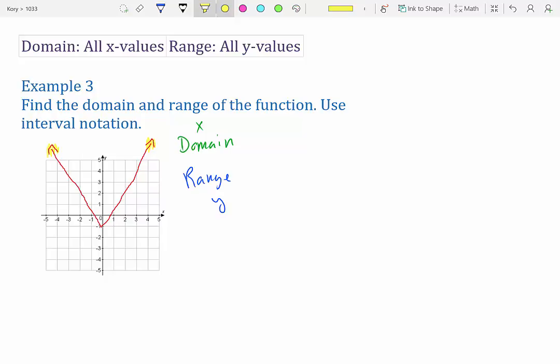So if it goes on forever, that means we can have any x value to the right and to the left. So if we keep drawing our graph, we can still have x at a million. So the domain is all real numbers. Now to write that in interval notation, that's negative infinity to positive infinity.